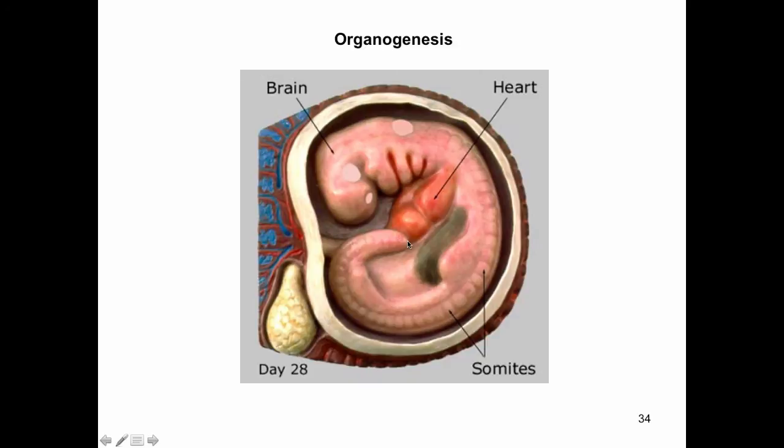At 28 days embryonic age, we have this embryo. It still looks a little lizard-like, but it's certainly a far cry from a flat disk. It's got this very clear C-shape. It's got a primitive heart that's already beating and can be heard on very sensitive ultrasound or sonogram, can be seen on an ultrasound.